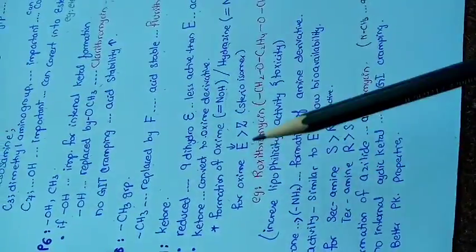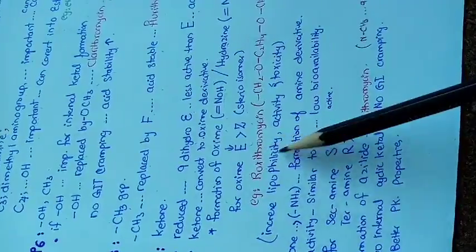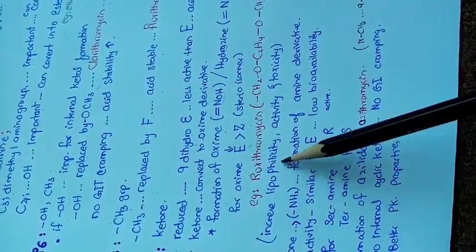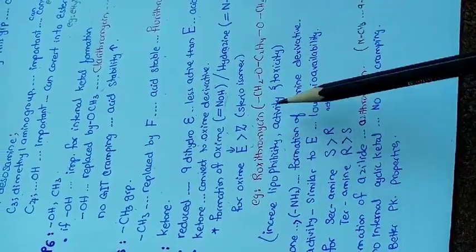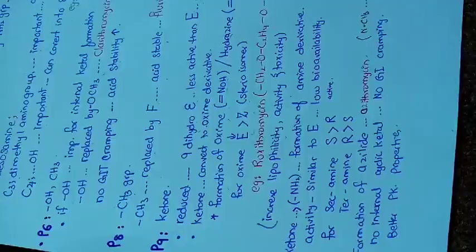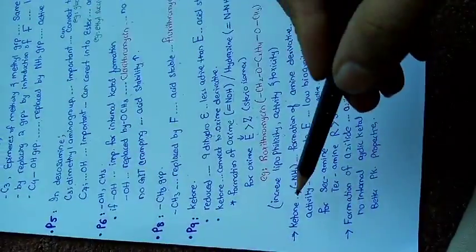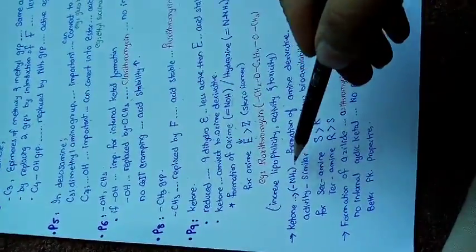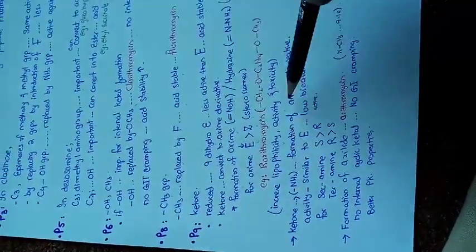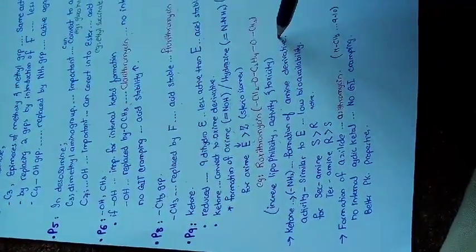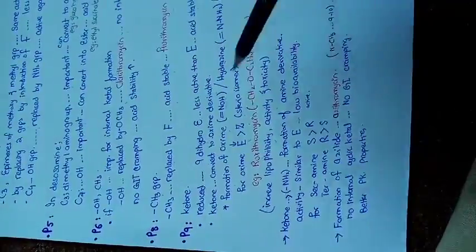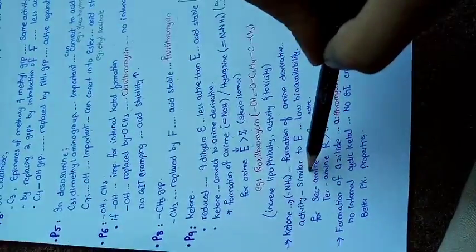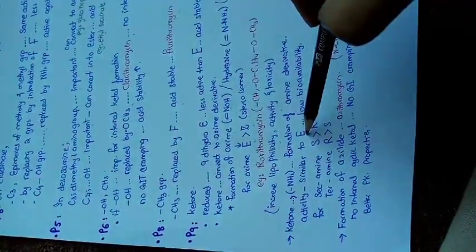The E stereoisomer has more activity than the Z isomer — for example, roxithromycin. This compound contains increased lipophilicity, activity, and improved toxicity profile. If the ketone at position 9 is replaced with an amino group, an amine derivative is formed which has activity similar to erythromycin but with low bioavailability.